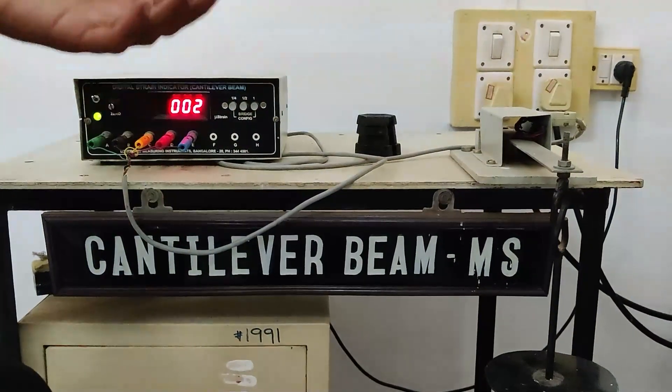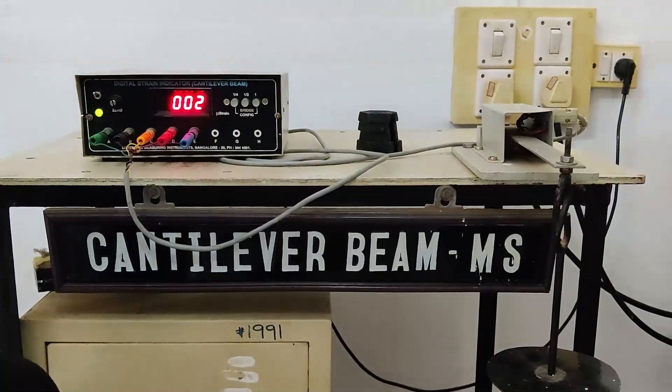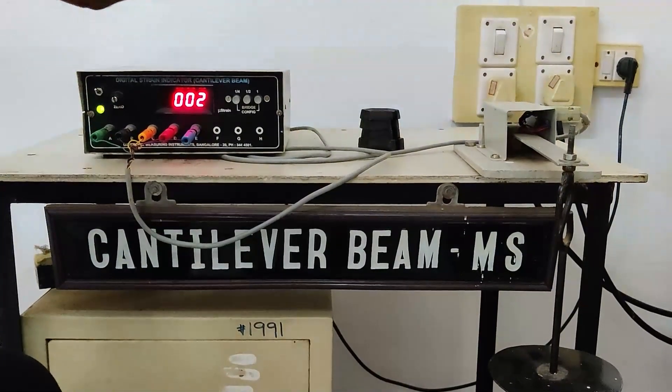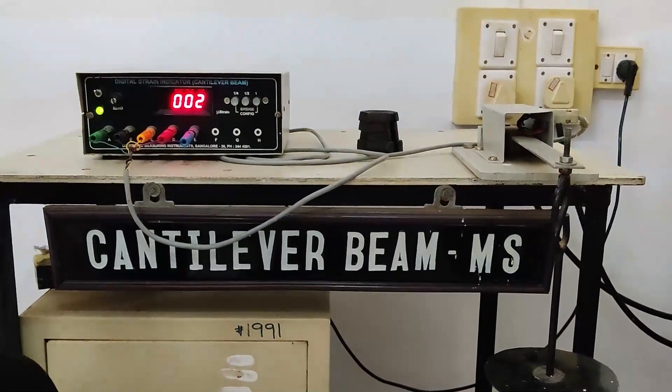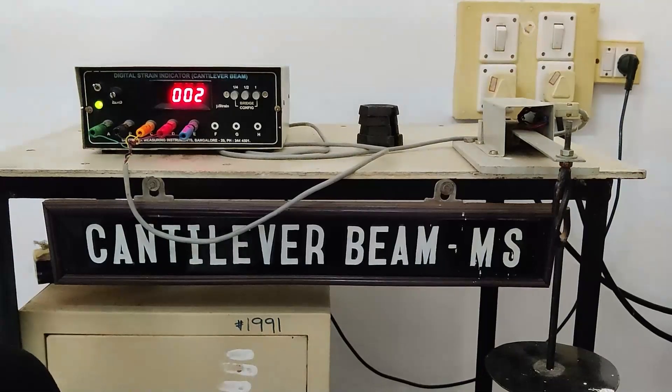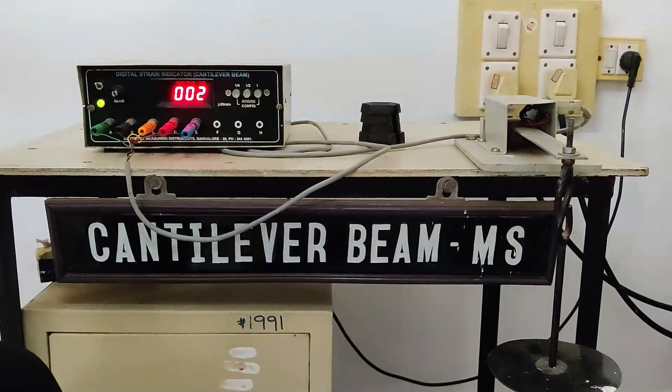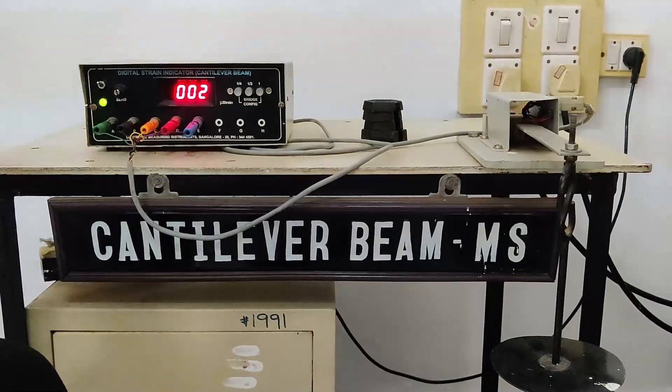The fundamental structure of strain gauge consists of grid shaped sensing element of thin metallic resistive foil that is sandwiched between base of the thin plastic film and covering of a lamination of thin film. And that's how it is basically manufactured and withered out.